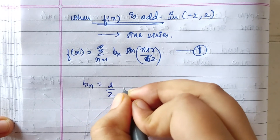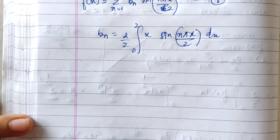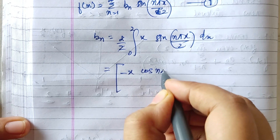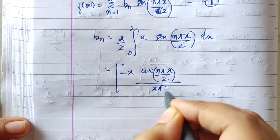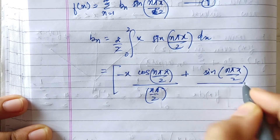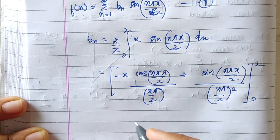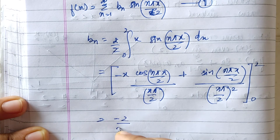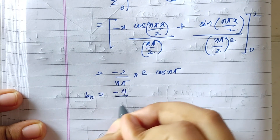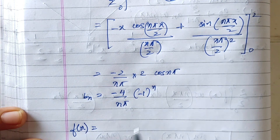bn will be 2 by 2 times the integral from 0 to 2 of x sin(n pi x / 2) dx. On evaluating the integral using integration by parts, we get minus x cos(n pi x / 2) divided by (n pi / 2) plus sin(n pi x / 2) divided by (n pi / 2) squared, evaluated from 0 to 2. On substituting the limits, we get minus 2 times (n pi) into 2 cos(n pi), hence bn is equal to minus 4 by (n pi) times (minus 1) to the power n, since cos(n pi) equals (minus 1) to the power n.